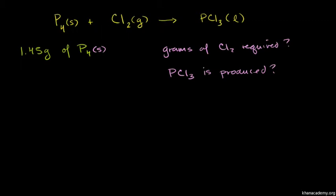So let's make sure. On the left-hand side, this molecule of phosphorus has four phosphorus atoms. So on the whole left-hand side, all of our reactants combined have four phosphorus atoms. So our products need to also have four phosphorus atoms, but the way it's written right now, I only have one. So let me just multiply this by four.